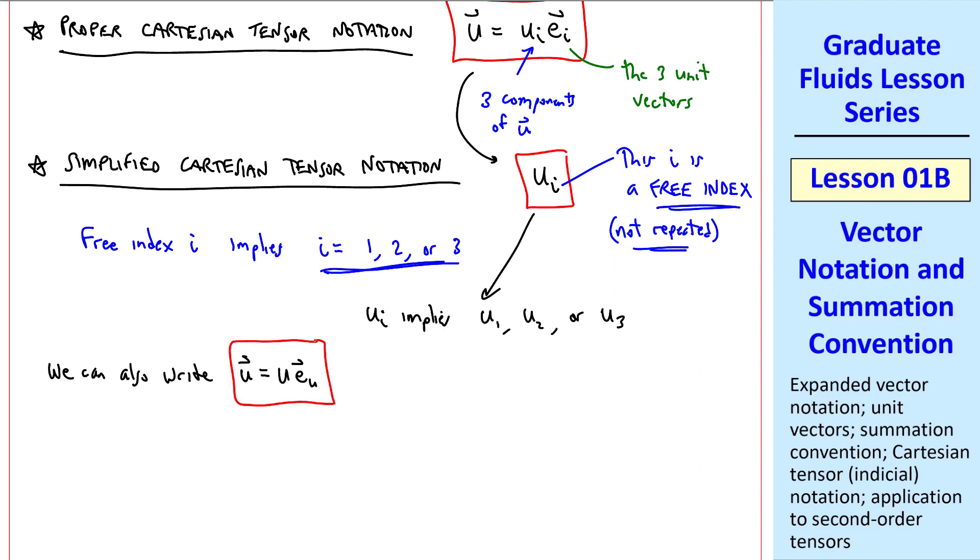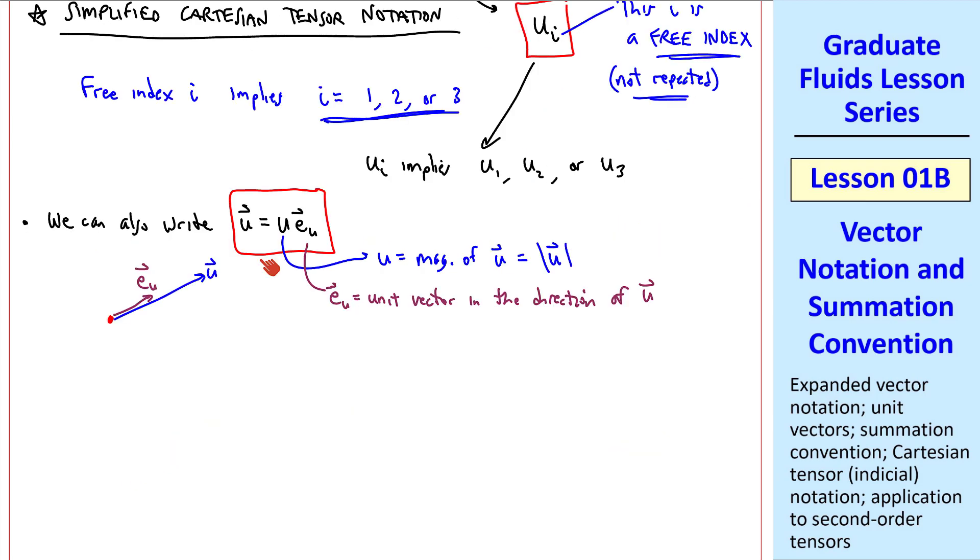Extending this idea, we can also write u equal u eu, where u is the magnitude of vector u, which we represent as the absolute value of vector u, and eu vector is the unit vector in the direction of u. I sketch that here. This is sometimes useful, but I won't use it that often.